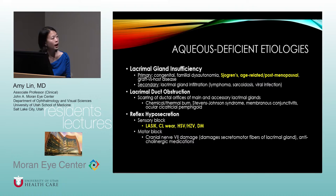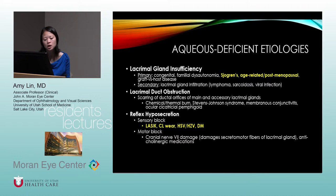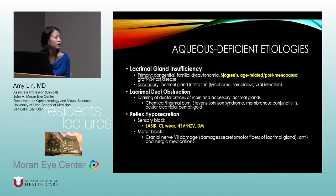Reflex hyposecretion occurs when there's a problem or blockage of sensory nerves with no feedback to the brain to produce a basal amount of tears. You'll see this with LASIK, contact lens wear, HSV, zoster, and diabetes — essentially any situation leading to neurotrophic keratitis. You can also have a motor block to the lacrimal gland caused by cranial nerve 7 damage and anticholinergic medications.